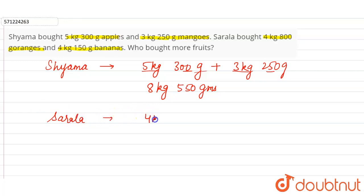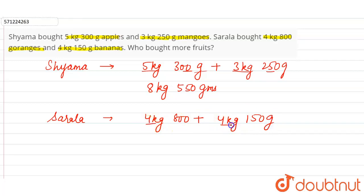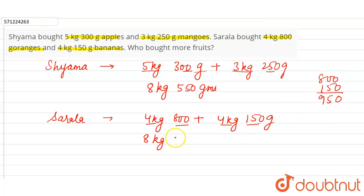Sarla bought 4 kg 800 grams of oranges plus 4 kg 150 grams of bananas. Adding the kg: 4 plus 4 is 8 kg. Adding the grams: 800 plus 150 is 950 grams. So Sarla bought a total of 8 kg 950 grams.